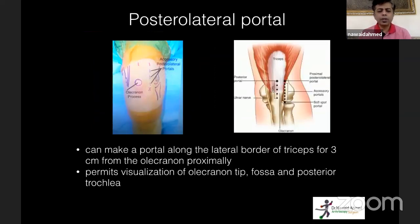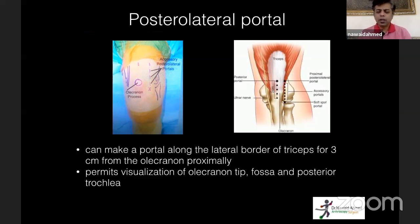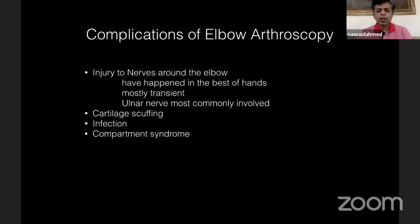The posterolateral portal is described as three centimeters proximal to the olecranon along the lateral border of the triceps, but you can use it as an accessory posterolateral portal anywhere along that line. It permits visualization of the olecranon tip, fossa, and posterior trochlea. The most important complication to consider in elbow arthroscopy is injury to the nerves around the elbow. These have happened in the best of hands, but fortunately are mostly transient, with the ulnar nerve most commonly involved.